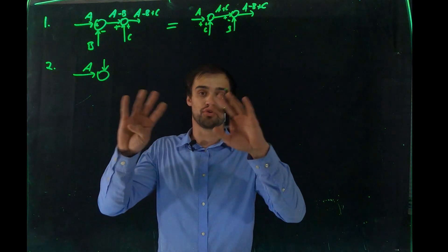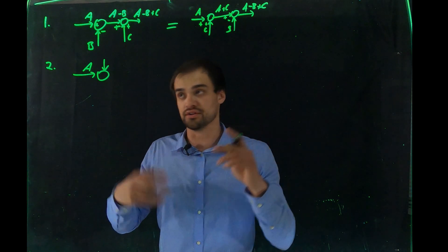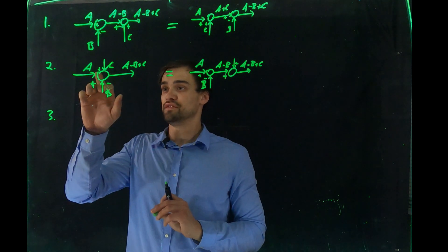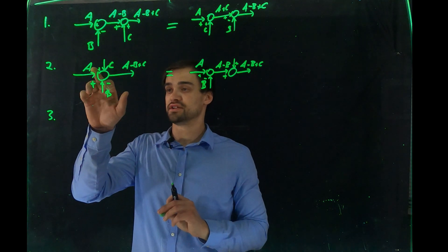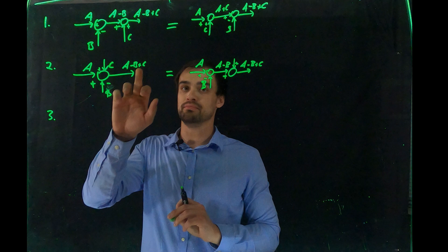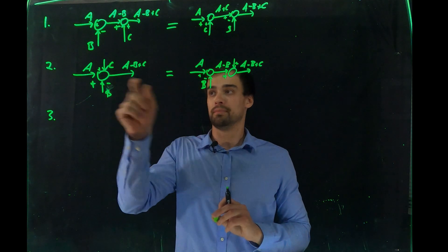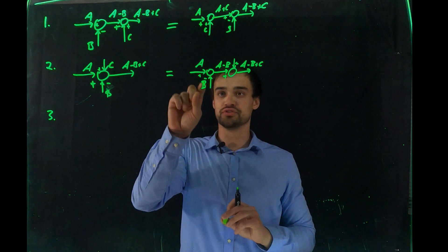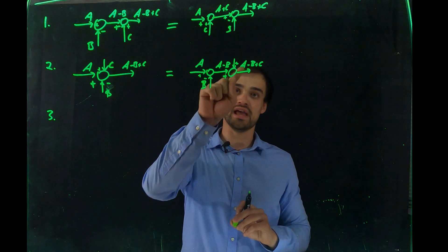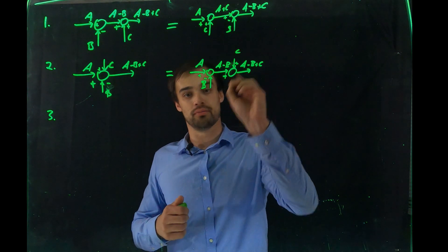Rule two says that if you have inputs A and C being added and subtracted by B at one node, you can split that single node into two separate nodes — first A minus B, then adding C — and get the same result A minus B plus C.